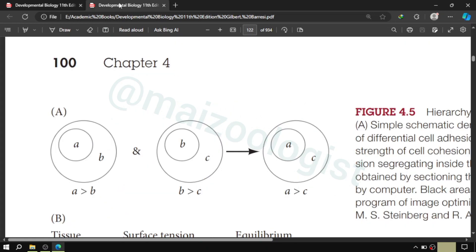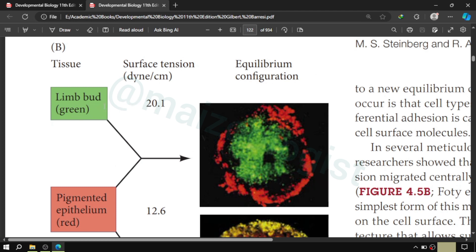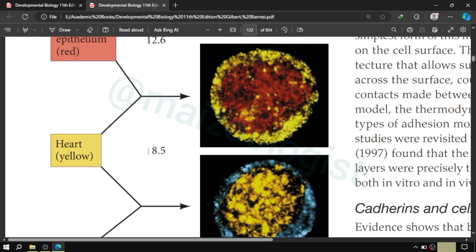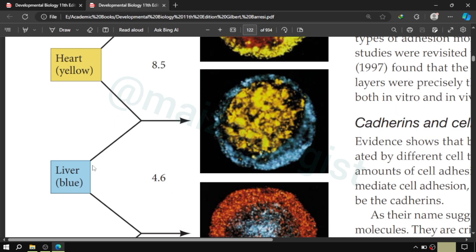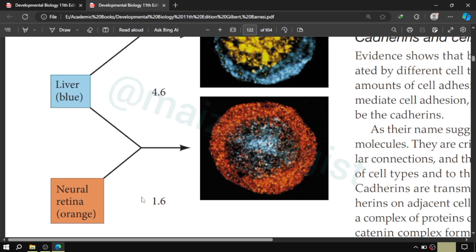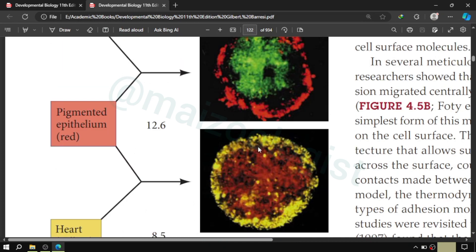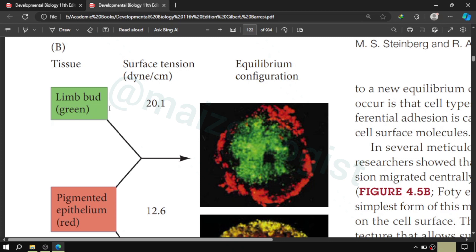Let us see it in the diagram. Here we have, we are seeing that this limb bud has a surface tension of 20.1 dyne per centimeter, and this pigmented epithelium has surface tension of 12.6 dyne per centimeter. And then heart cells have surface tension of 8.5 dyne per centimeter, and so liver cells. And then here we have the neural retina cells. And we can see that these cells are going to arrange themselves in the similar fashion. The cells with the highest surface tension are internal. The green one, or the limb bud, is internal to the pigmented epithelium red one.